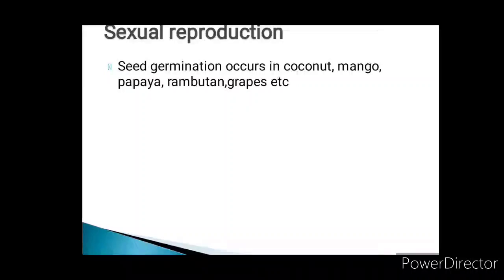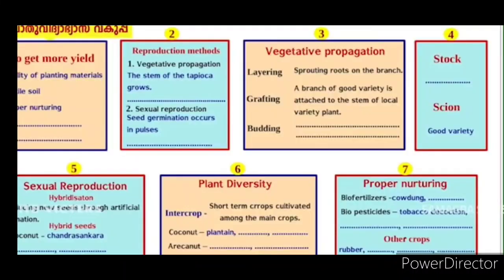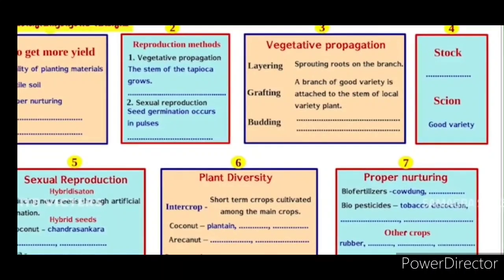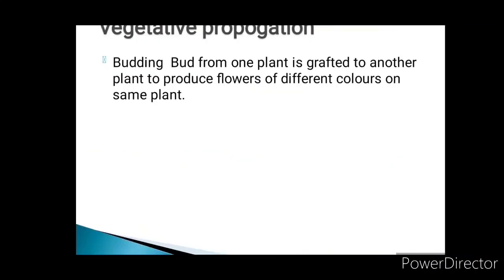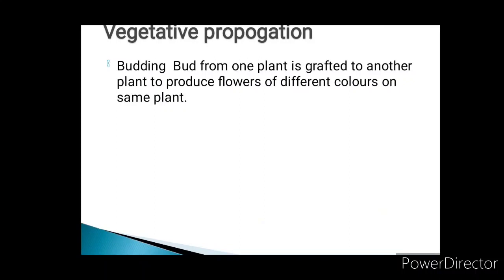In vegetative propagation, we have layering and grafting. A branch of good variety is attached to the stem of a local variety plant. In grafting, the stem of one plant is attached to the stem of a local variety plant. In budding, the bud from one plant is grafted to another plant to produce flowers of different colors on the same plant.